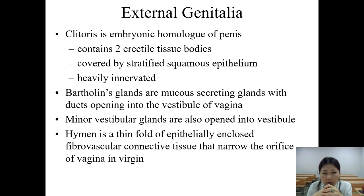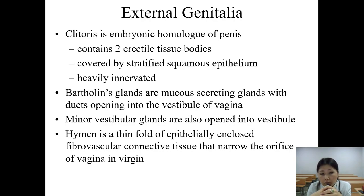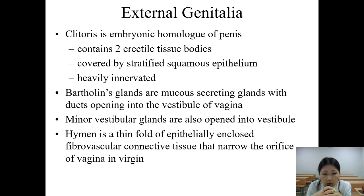The clitoris is an embryonic homologue of the penis and contains two erectile tissue bodies covered by stratified squamous epithelium, with a heavily innervated glans. Bartholin's glands are mucus-secreting glands with ducts opening into the vestibule of the vagina. The minor vestibular glands also open into the vestibule.